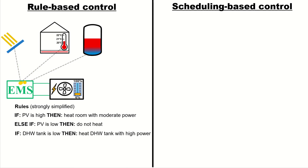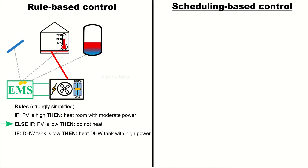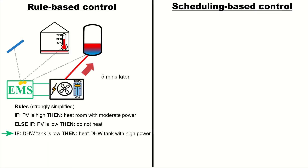The energy management system decides which rule applies. For example, in one time slot the first rule applies because we have high PV generation, and thus we heat up the room with moderate power. Five minutes later the second rule applies — PV generation is low and thus we do not heat the room at all. Then five minutes later the third rule applies because the volume of the hot water tank is low, and thus we heat up the hot water tank with high power. And we just keep doing that constantly.